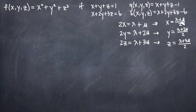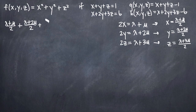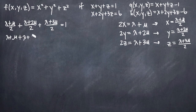Plugging x, y, and z into the first constraint equation x plus y plus z equals 1, we get (lambda plus mu)/2 plus (lambda plus 2 mu)/2 plus (lambda plus 3 mu)/2 equals 1. Multiplying both sides by 2 to clear fractions gives lambda plus mu plus lambda plus 2 mu plus lambda plus 3 mu equals 2, which simplifies to 3 lambda plus 6 mu equals 2.